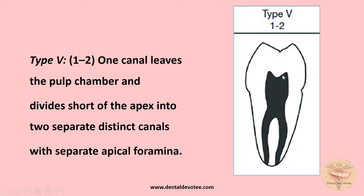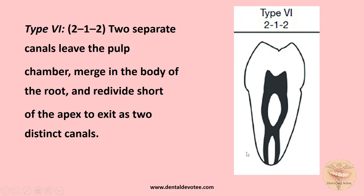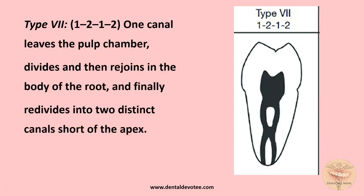In Type 5, '1-2' configuration, a single canal leaves the pulp chamber and divides into two before reaching the apex. Type 6 is '2-1-2': two canals leave the pulp chamber, join together, and then separate again into two.